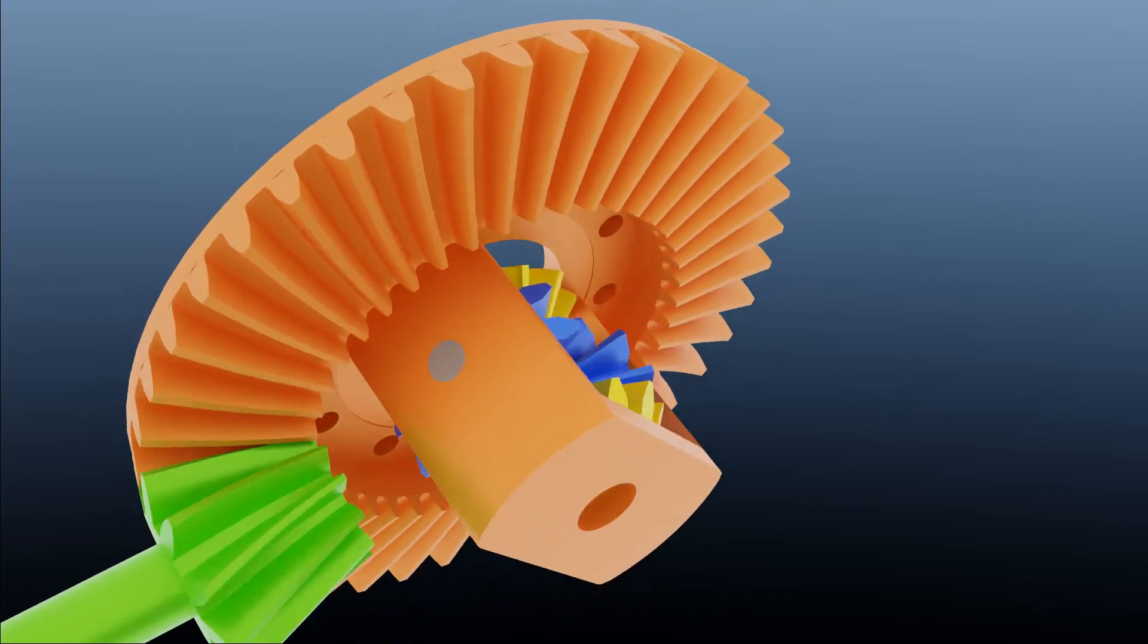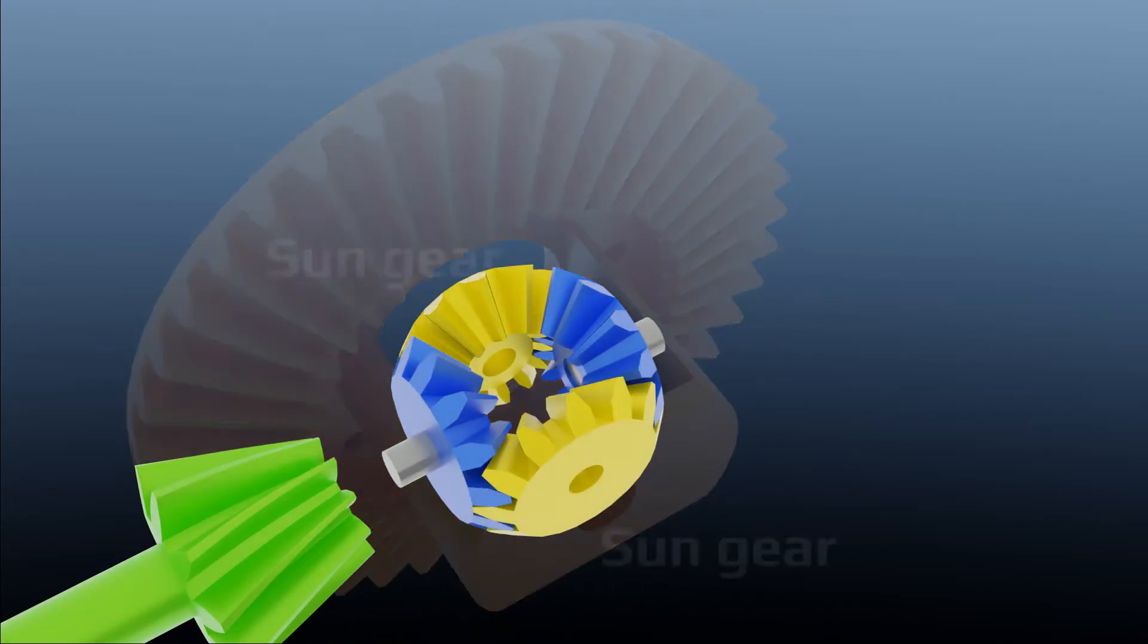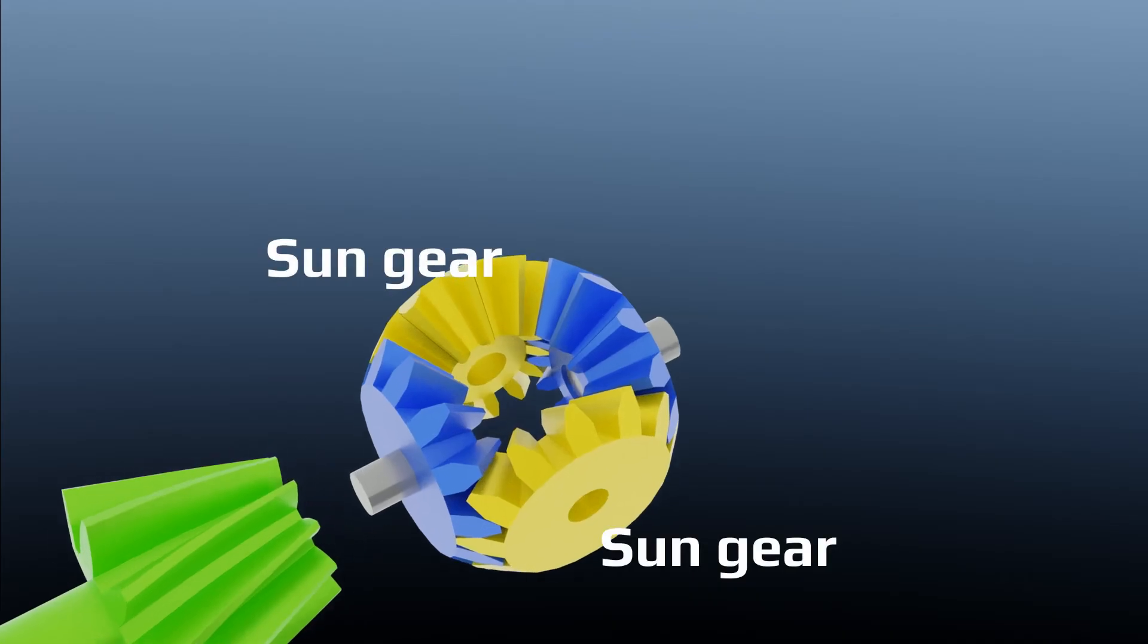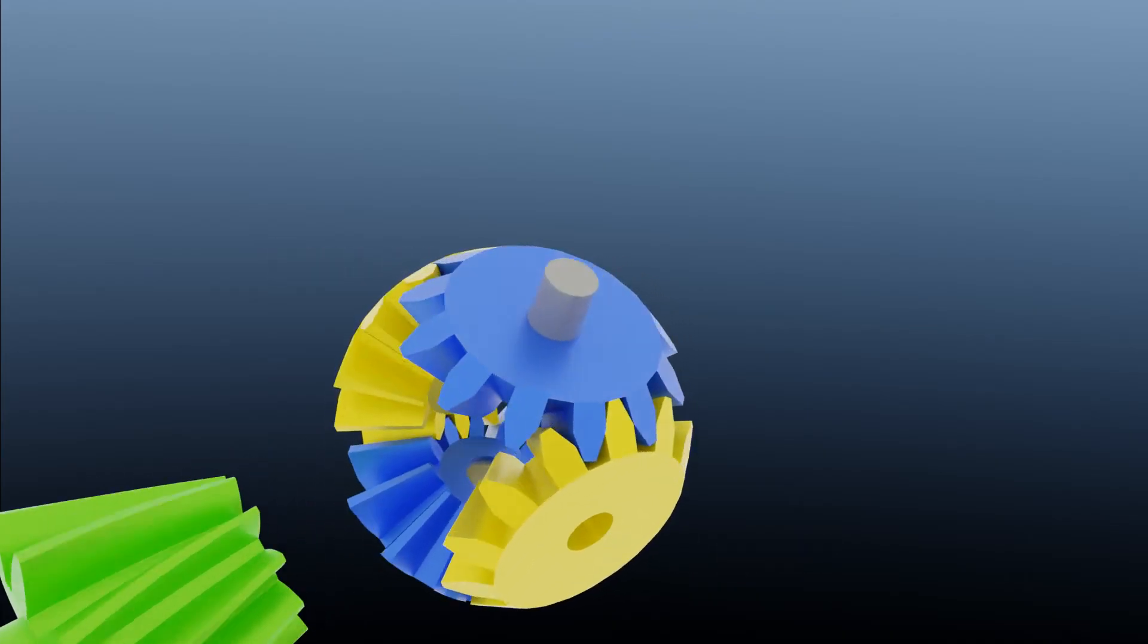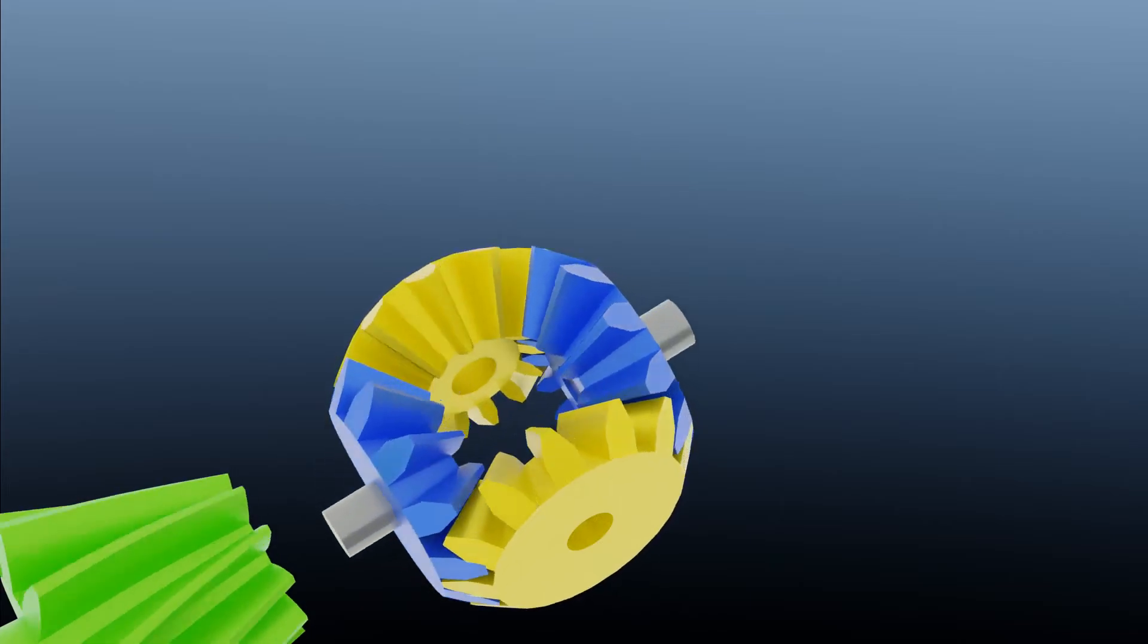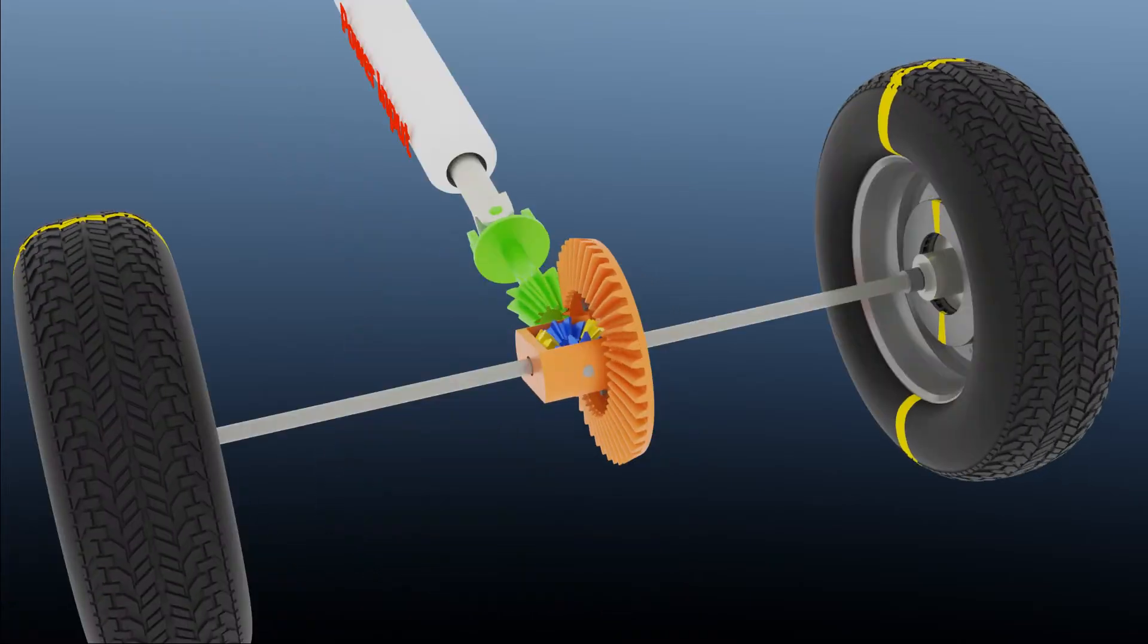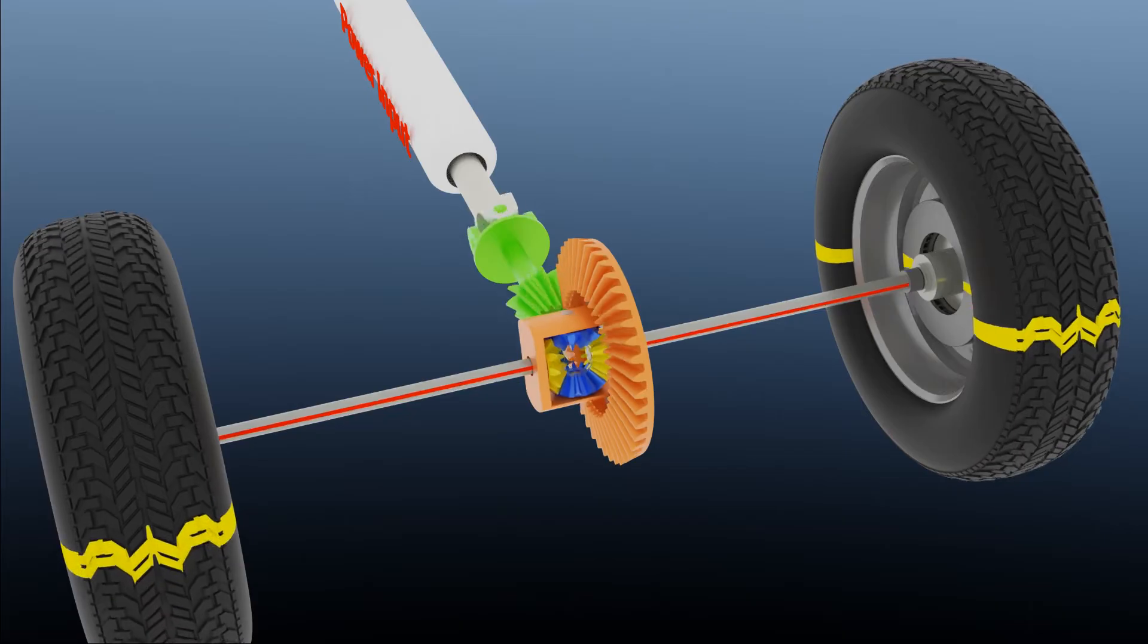These two are sun gears. Sun gears are in gear mesh contact only with the spider gears, so spider gear rotation makes them rotate too. Each sun gear is connected with its respective side drive axle. Drive axles make the wheels rotate.